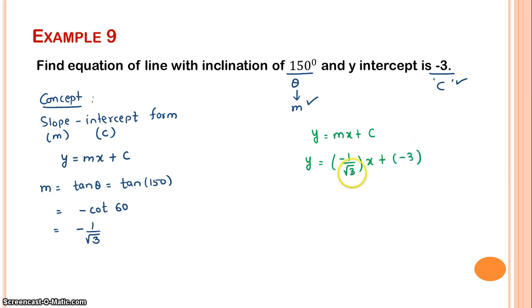Let's do detailed calculation. Multiply each term by √3: √3y = -x - 3√3. Moving terms to left hand side: x becomes positive, so x + √3y + 3√3 = 0. This is your answer. Coordinate geometry examples are important - if you have any doubts, review part 1 and part 2. Make sure to prepare notes properly.